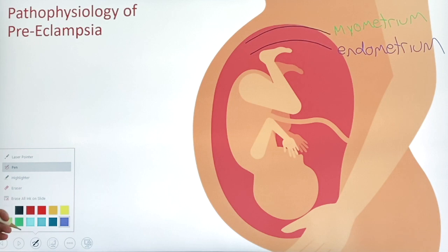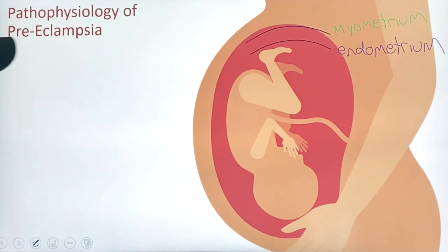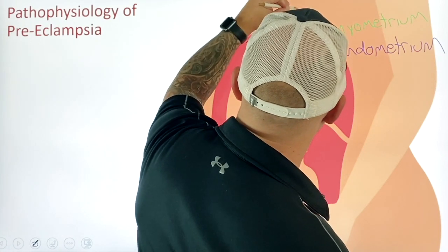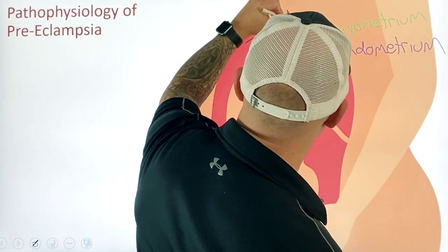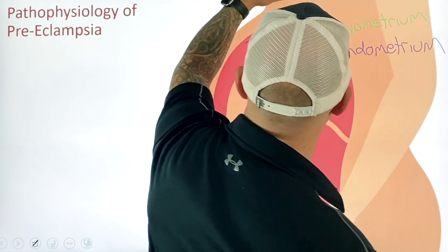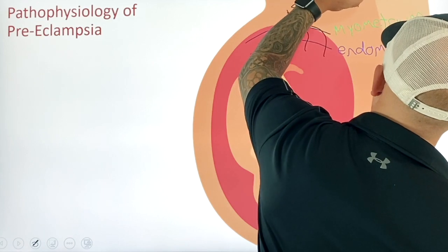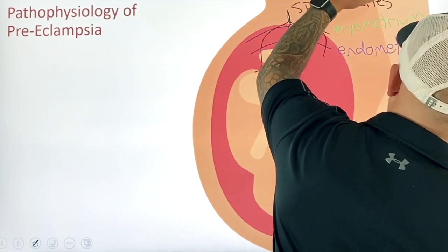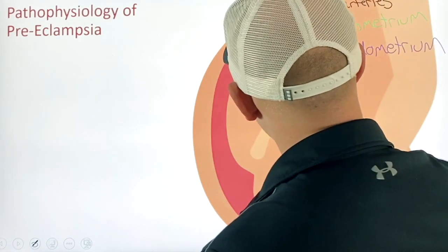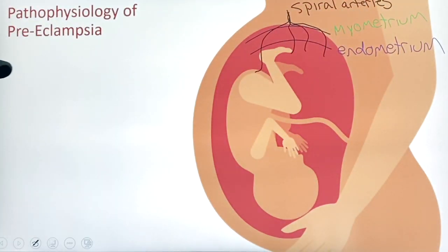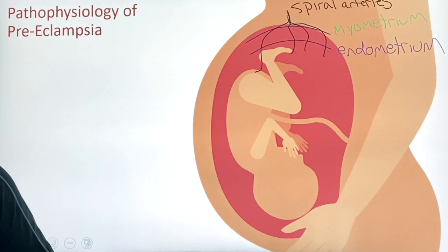After those two layers, we have the placenta, and then a bunch of channels of vessels. These vessels are called your spiral arteries, and your spiral arteries are what's going to feed the baby itself — feed the embryo and get it the nourishment it needs.